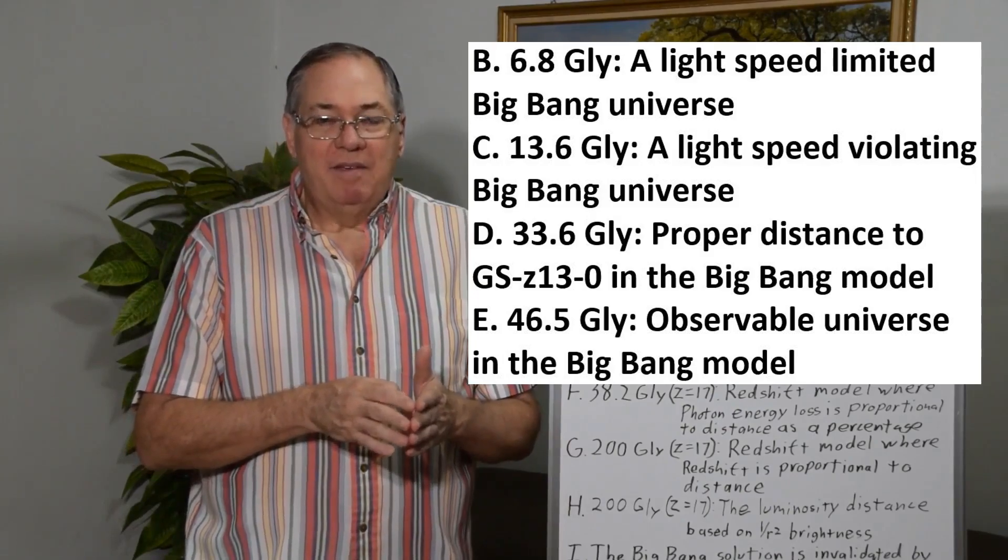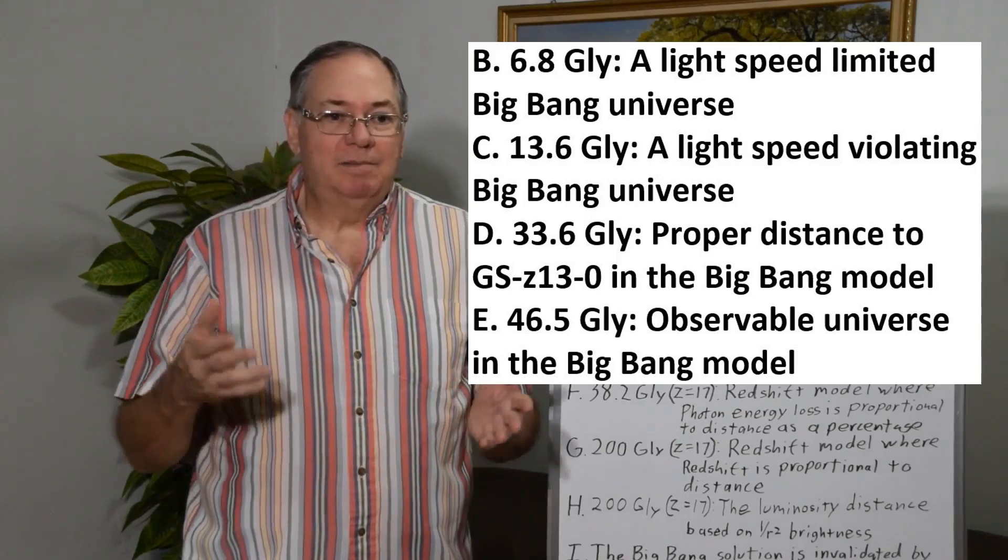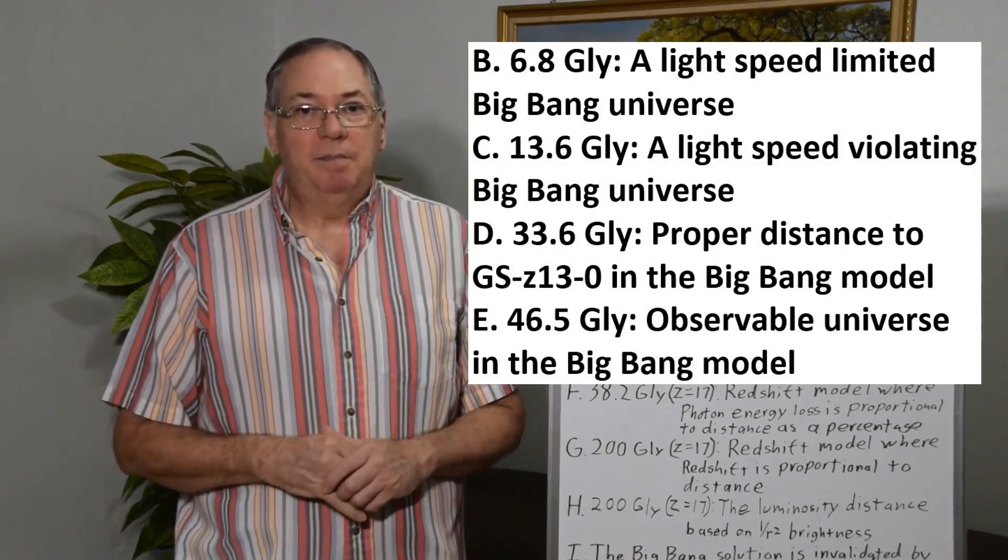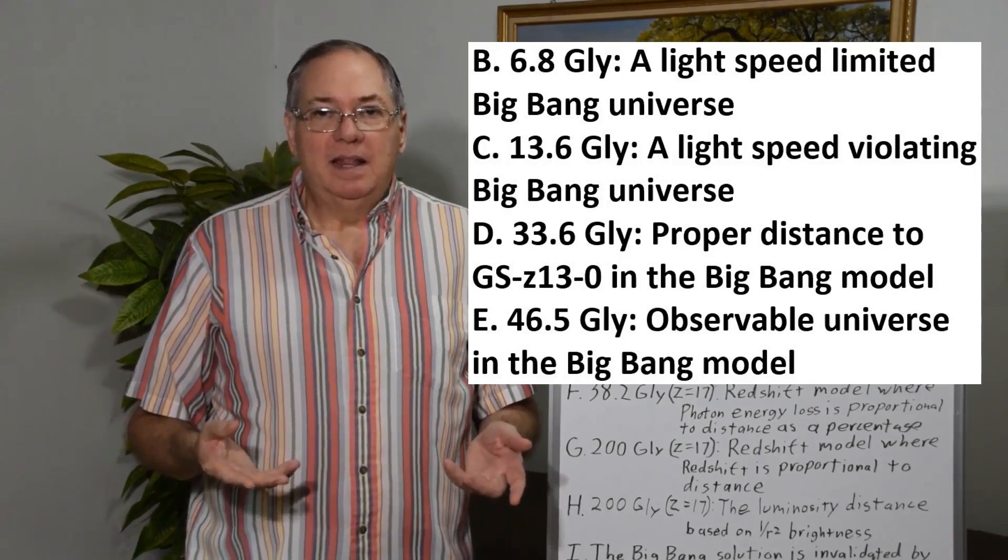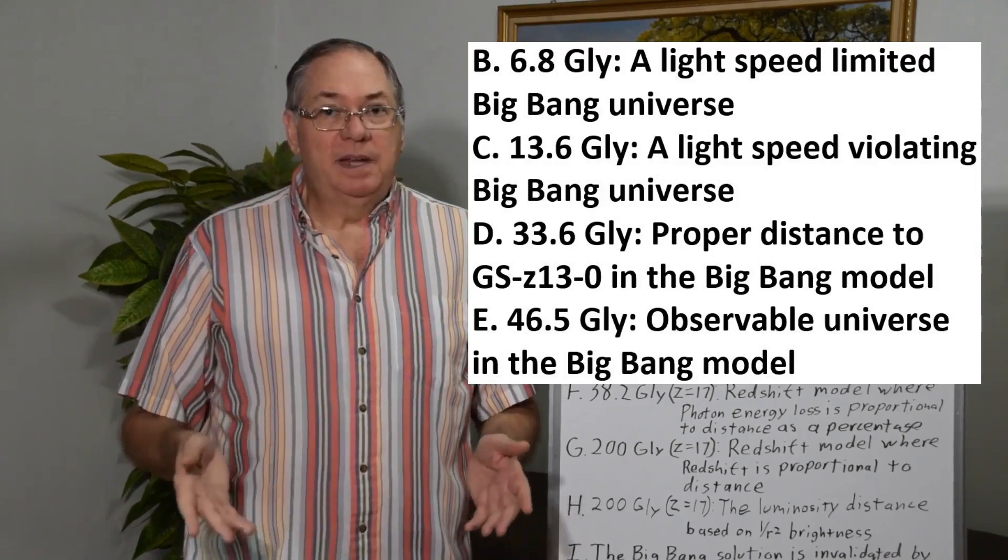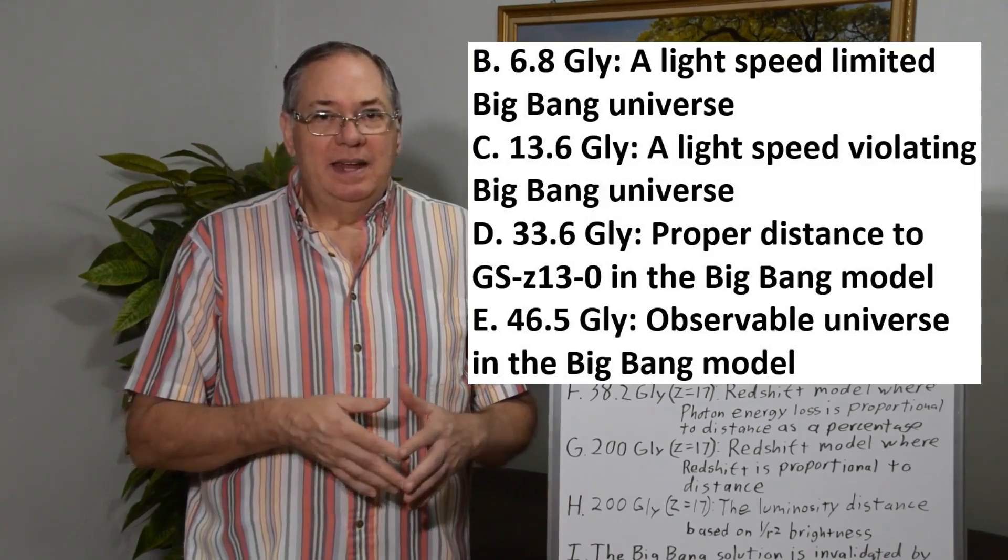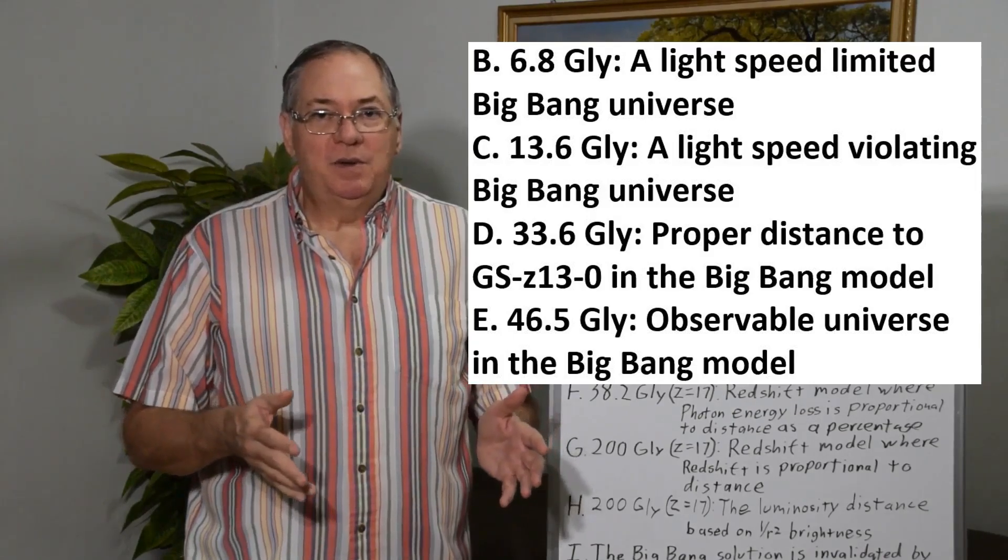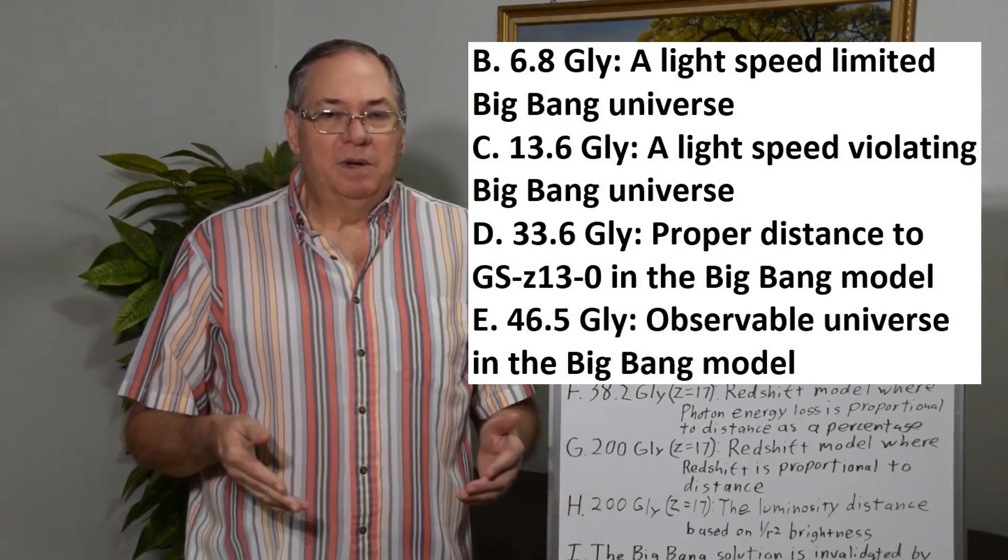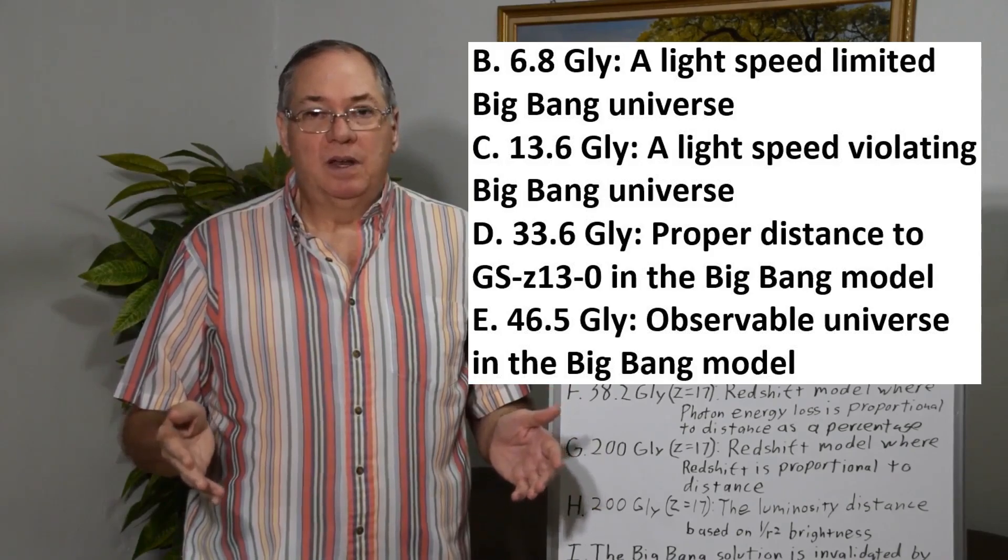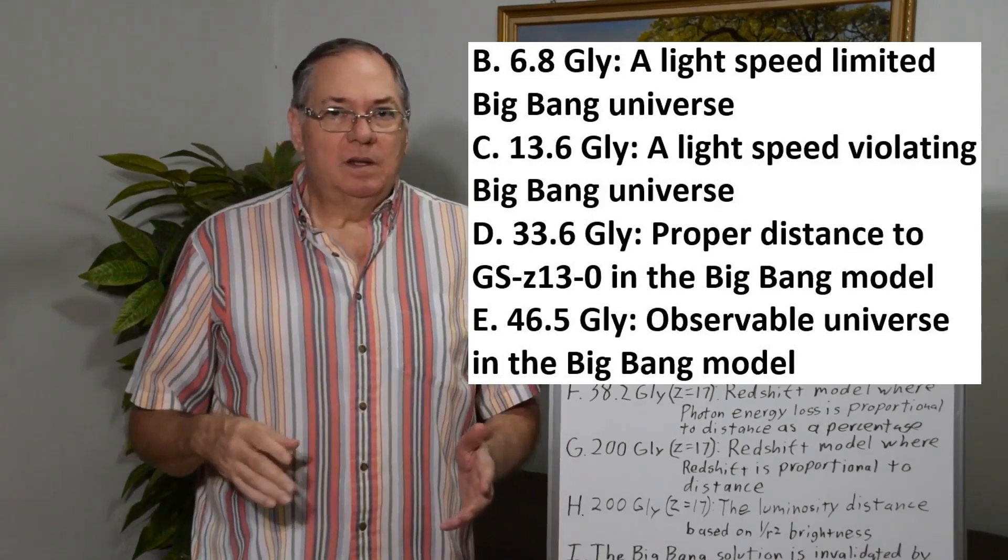Because if you had matter moving at the speed of light, and then light coming back to us at the speed of light, 6.8 billion light years is the limit. But if you have a Big Bang model that violates the speed of light limit, then you could see out to 13.6 billion light years, which is what we say now. Somehow, the universe is said to expand instantaneously in cosmological terms, which allows us to see further than we could if it was expanding at the speed of light.